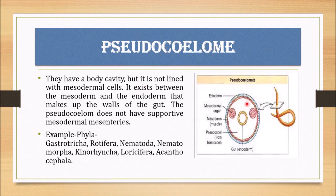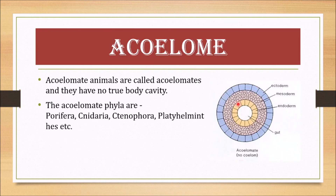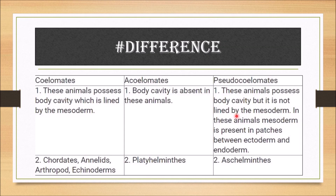Pseudocoelomates have a cavity, but it is not lined with mesoderm. In the case of acoelomates, there is no cavity in the body at all — just ectoderm, mesoderm, endoderm, and gut. This is the acoelomate condition.